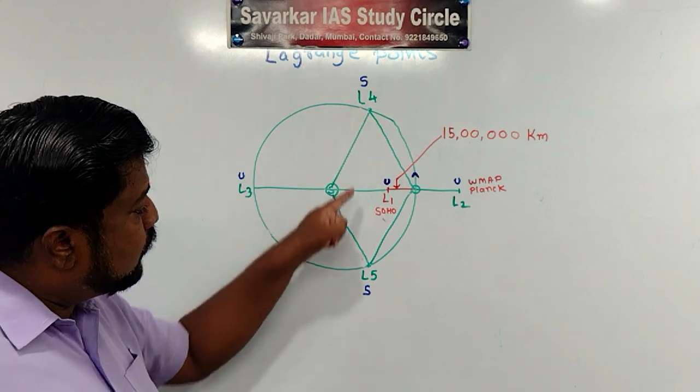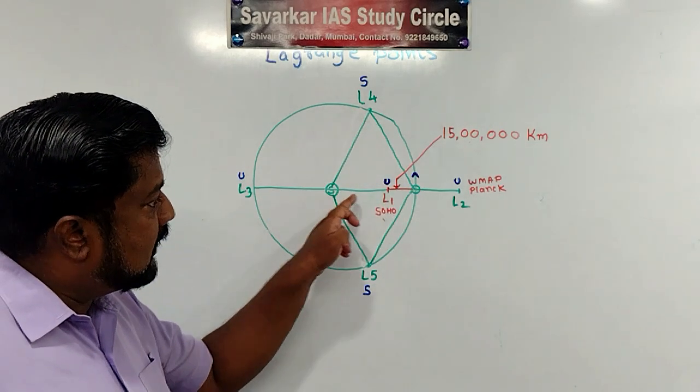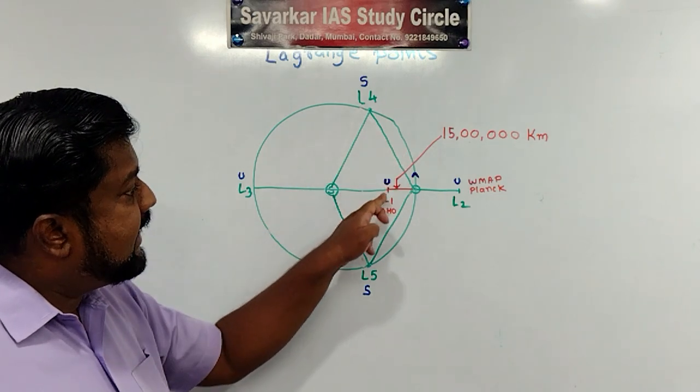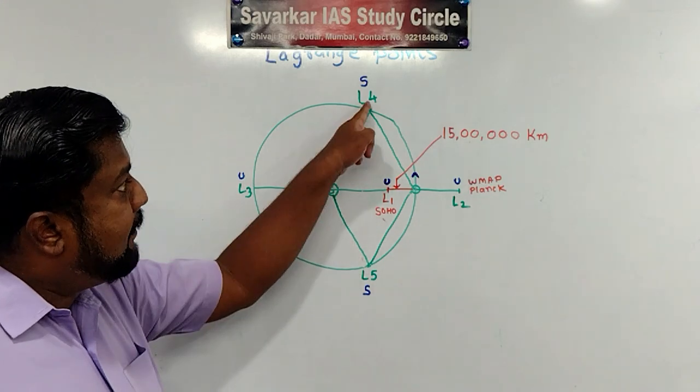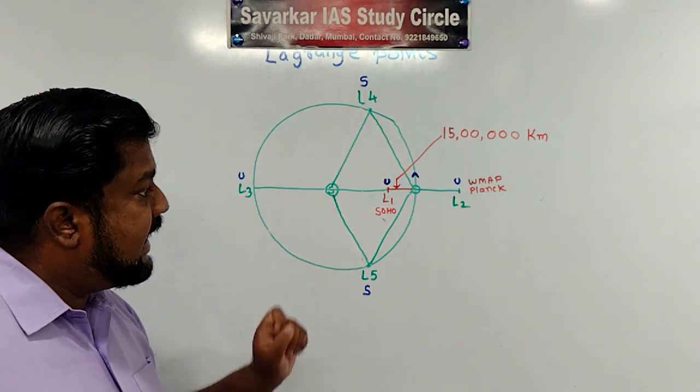After that L4 and L5. Just consider Sun to Earth as a base. And equidistance. We have to draw equilateral triangle here and equilateral triangle here. Apex of the equilateral triangle. We are having L4 and L5 point.